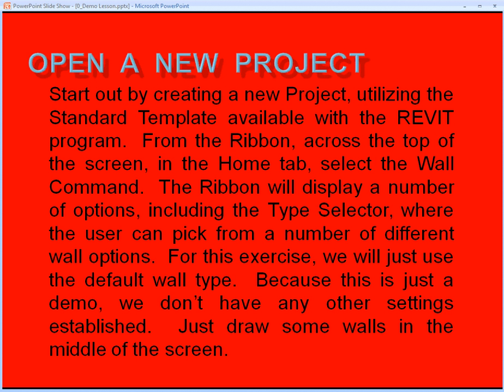Now to Revit. Start out by creating a new project utilizing the standard template available with the Revit program. From the ribbon across the top of the screen, in the home tab, select the wall command. The ribbon will display a number of options including the type selector, where the user can pick from a number of different wall options. For this exercise, we'll just use the default wall type. Because this is just a demo, we don't have any other settings established.